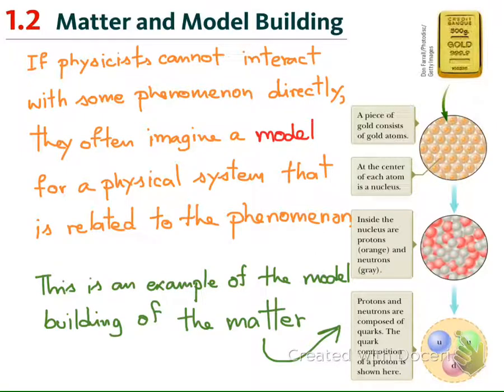After we do some measurement and study some phenomena, and after we have the result, the next step is to try to understand the relation between the quantities. Most of the time, we cannot directly observe or directly see the relation — we just have the measurement results. So we have to create or imagine how these quantities are related, and physicists usually use a model or mathematical model to do that task.